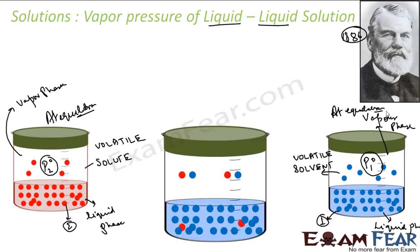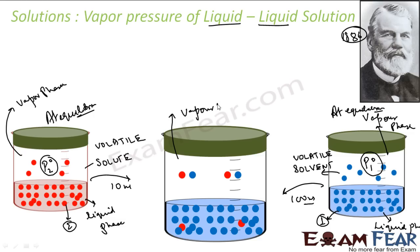Now you mix these two. Since it is the first solute, let's suppose I took 10 ml of this and 100 ml of this. I mix these two. Now, since both are volatile, there is a vapor phase and a liquid phase. If you mix these two, you can calculate the mole fraction of component one and the mole fraction of component two in the liquid phase.